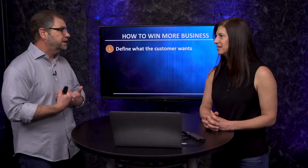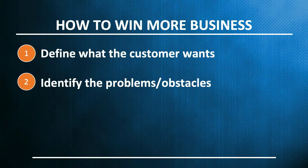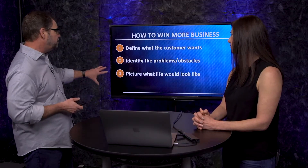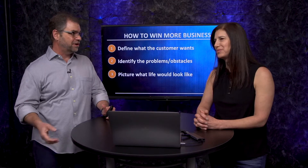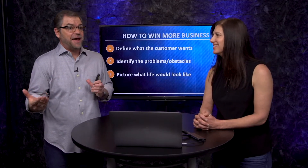We want to talk about what's really going on inside the customer. The next step to win more business is identifying the problems and obstacles keeping them from accomplishing what they really want — something in their way — and we want to document those. The next step is a picture of what life would look like: what life would look like if they solved their problem with your company, but also what life would look like if they didn't use your company to solve their problems, because understanding that downside is also a useful optional message.